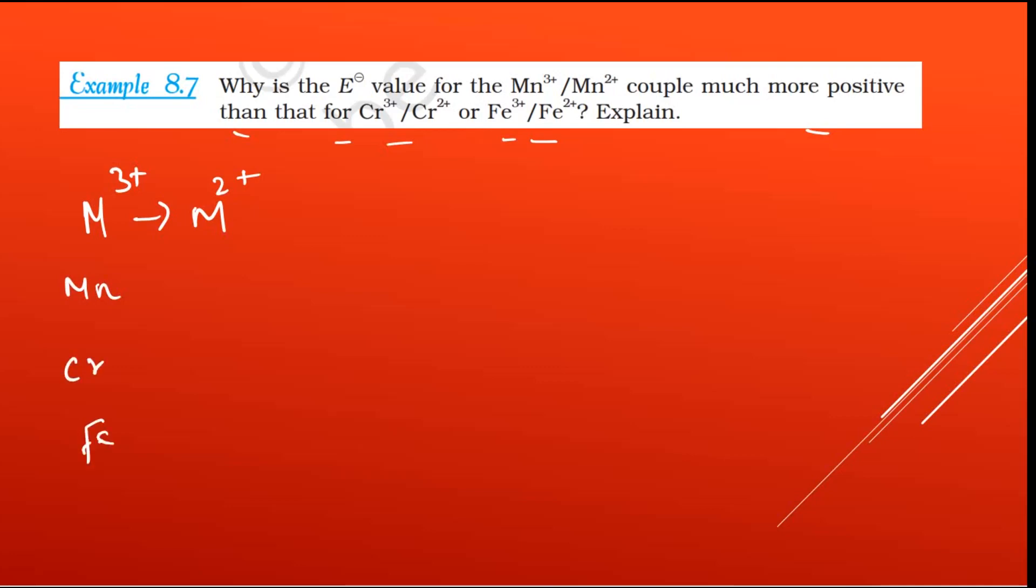So Mn means it will be [Ar] 3d⁵ 4s², and chromium means it is [Ar] 3d⁵ 4s¹, and iron it is [Ar] 3d⁶ 4s².